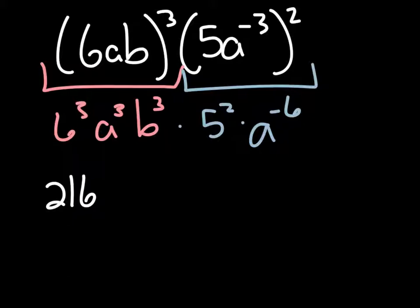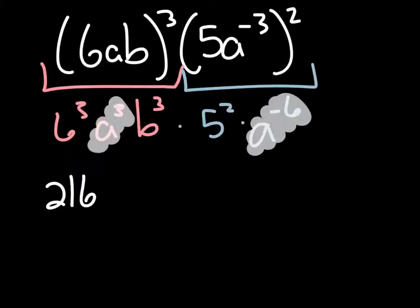We have multiple a's here. So let's do some combining. We've got a cubed, a to the negative 6. Those can be combined to become a to the negative 3rd. And then we have b cubed. And 5 squared is 25.